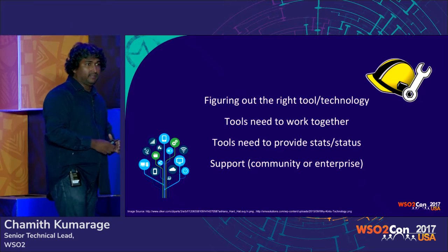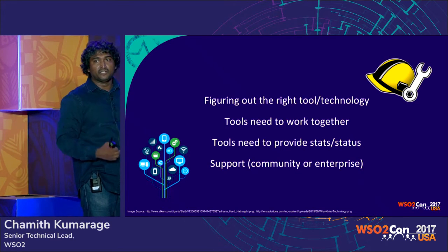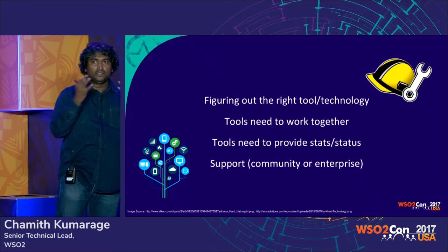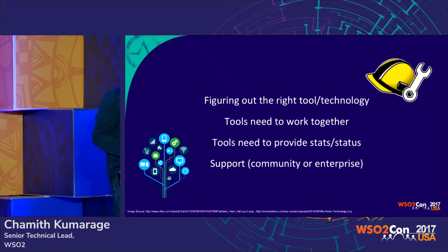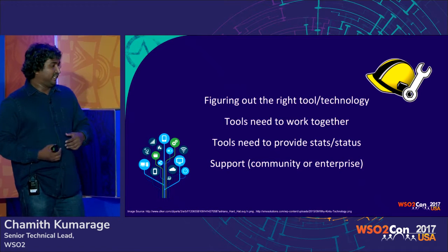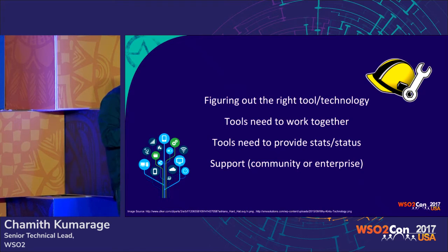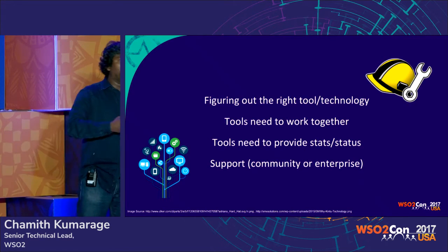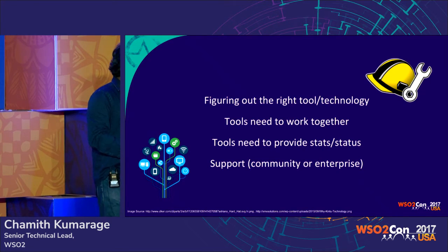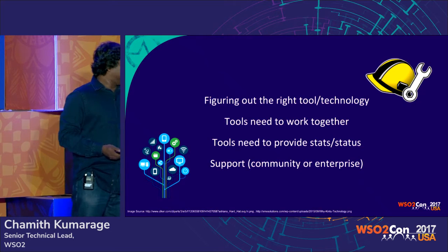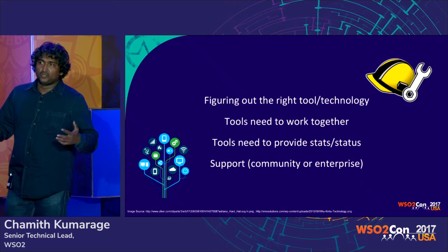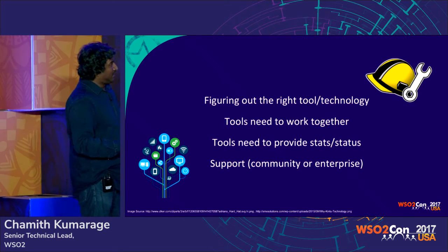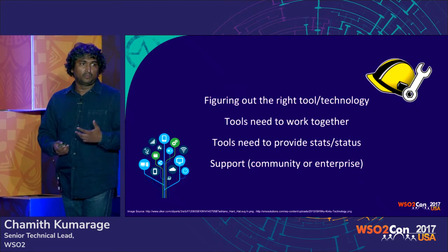If you just hit one button, everything should follow until you get something running that you can actually use. The tools also have to provide stats and statuses — whether the tool worked successfully, whether it deployed what it was supposed to deploy, and how long certain operations took. Those stats are very useful to improve your story and the service you provide. When selecting tools and technologies, support becomes critical. If it's a well-known open source project, you have good community support; if not, check whether the tool comes with professional or enterprise support.